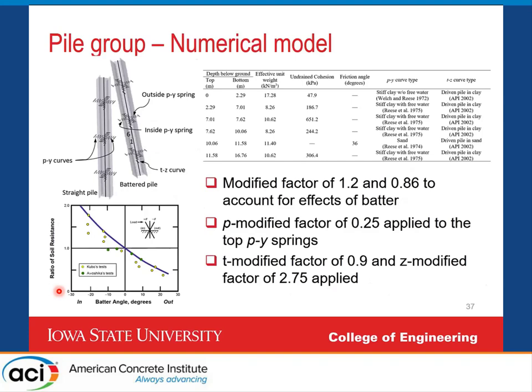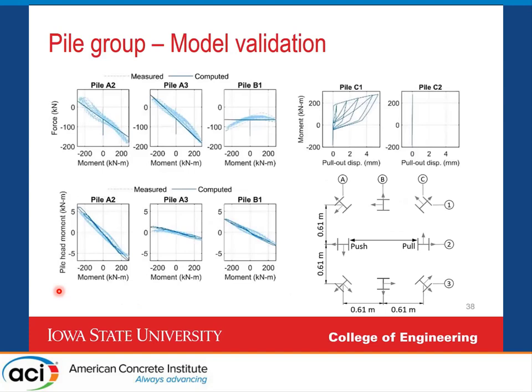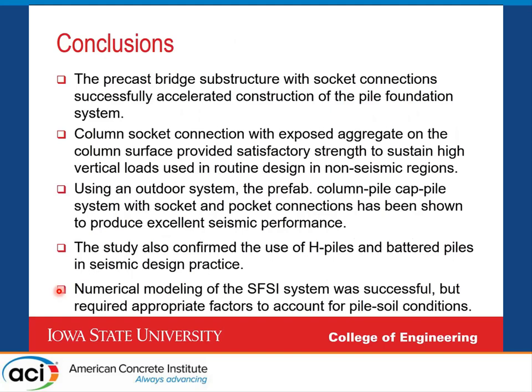The model produced fairly satisfactory results. We were fortunate to compare experimental data and justify the use of appropriate factors, though we recognized ways to improve. We wanted to share how far existing recommendations would get you with this system. Most of the nonlinearity came from the column itself, so foundation flexibility wasn't too problematic. Challenges remain in appropriately characterizing soil plugging, and the battered pile stiffness increased with pile depth, so the group effect factor had to be modified. We were able to make those changes because we had the experimental data.